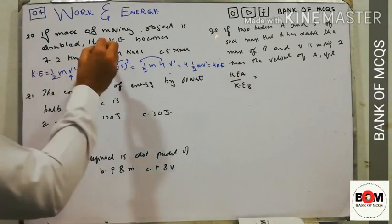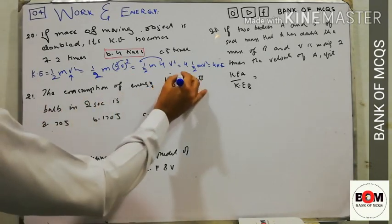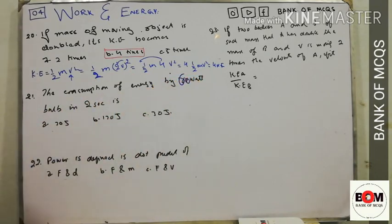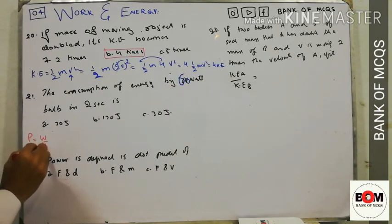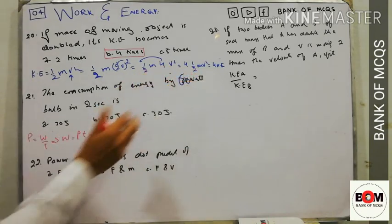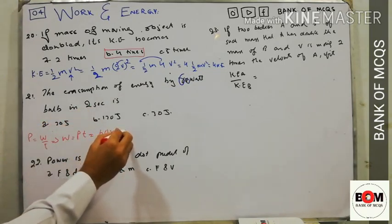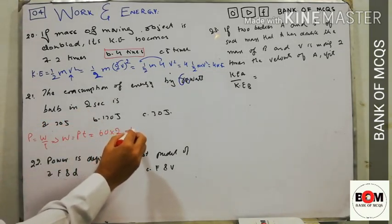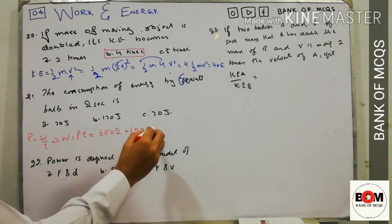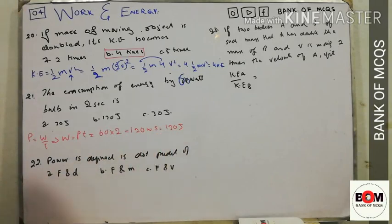MCQ: energy consumption by a 60-watt bulb in 2 seconds. P = W/t so W = P×t = 60 × 2 = 120 watt-seconds = 120 joules. The energy consumption is 120 joules.